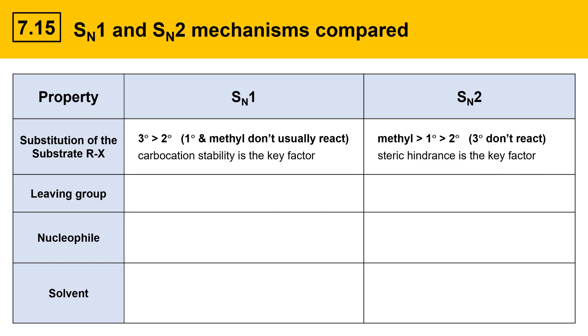Next we'll take a look at leaving group. It turns out that both SN1 and SN2 require a good leaving group because the leaving group leaves in the rate determining step. So this isn't something that you can use to distinguish mechanisms — they both require a good leaving group.